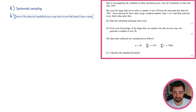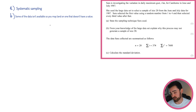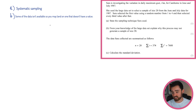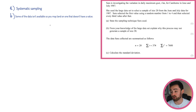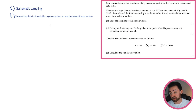Let's have a look at the last part of the question. The data collected are summarized as follows: N is 20, the sample size is 20. The sum of T — so the sum of all the daily maximum gusts — is 274. And the sum of T squared is 7600. Calculate the standard deviation.